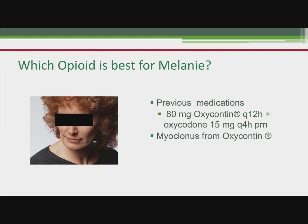Given that Melanie needs opioids, she was previously on 80 milligrams of OxyContin every 12 hours and oxycodone 15 milligrams every 4 hours as needed — the 15-milligram rescue reflecting 10% of her total daily dose of 160 milligrams. She developed myoclonus from the OxyContin, and additionally her insurance won't pay for it now that it's back on patent. Even on this much OxyContin, her pain is intolerable because of the terrible nerve pain in her pelvis, not just the bone pain.